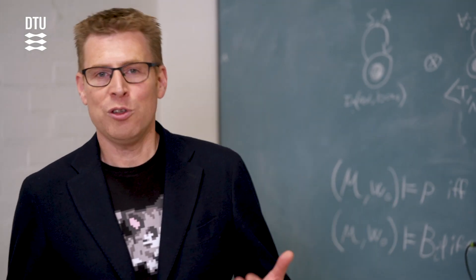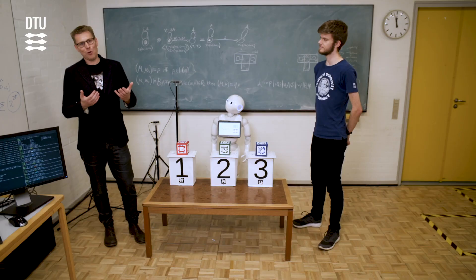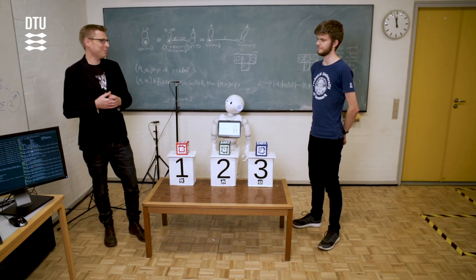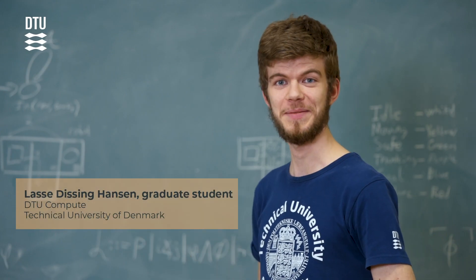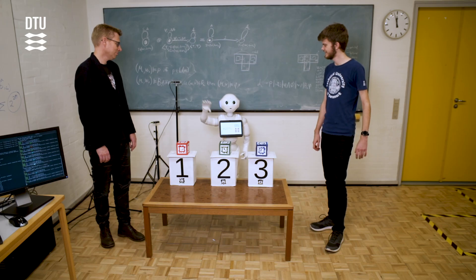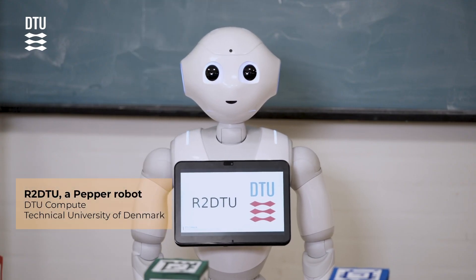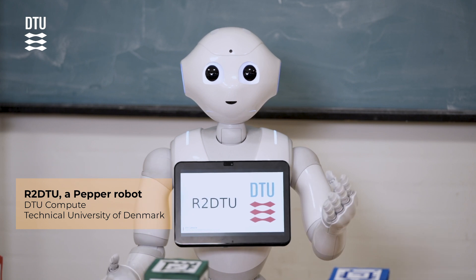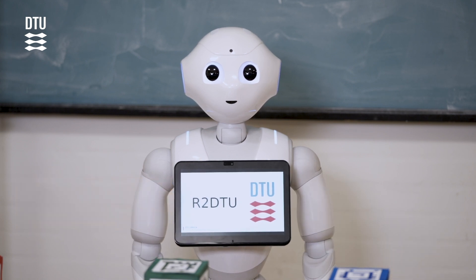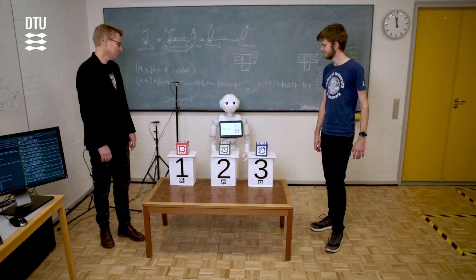I'm now going to introduce the two individuals that are going to help with the test. My name is Lasse and I'm a graduate student here at Technical University of Denmark. I am the robot. My name is R2DTU. I work as a research robot at DTU Compute. The researchers try to teach me how to become socially intelligent.